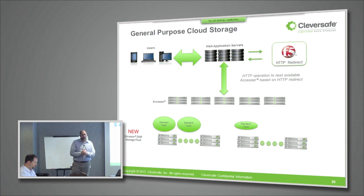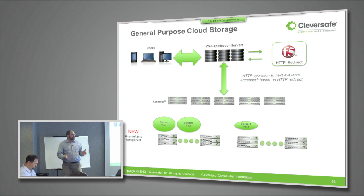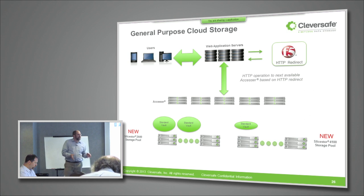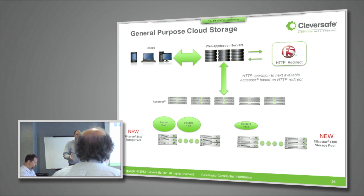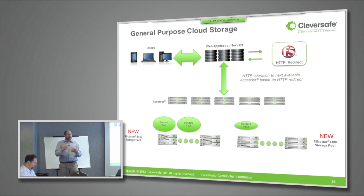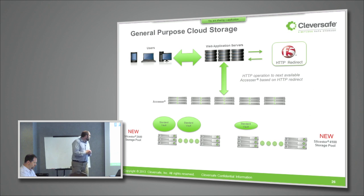The first one we call the Slice Store 2440. It's physically the same as the Slice Store 1440 — 4U, 48 drives — but it's faster. It's got 10 gigabit ethernet, faster processor, more memory, and an additional host bus adapter to drive more throughput and lower latency. We've also introduced an all-SSD-based slice store, the Slice Store 4100, which is a 1U storage node with eight SSDs that provides very high performance for handling things like this thumbnail workload — a lot of very small files that you need to access very frequently.